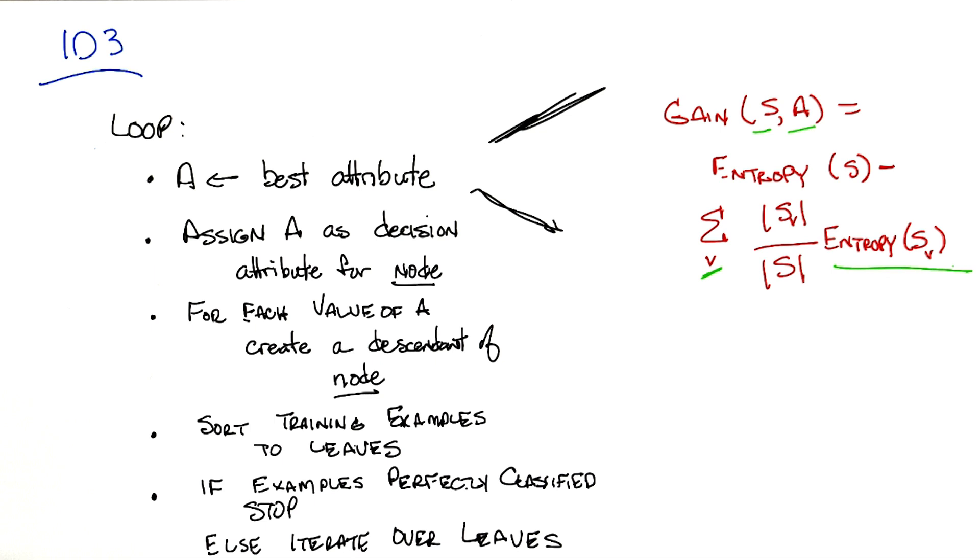Because if I were to close my eyes and reach for an instance, I have no way of knowing beforehand whether I'm more likely to get an X or I'm more likely to get an O.